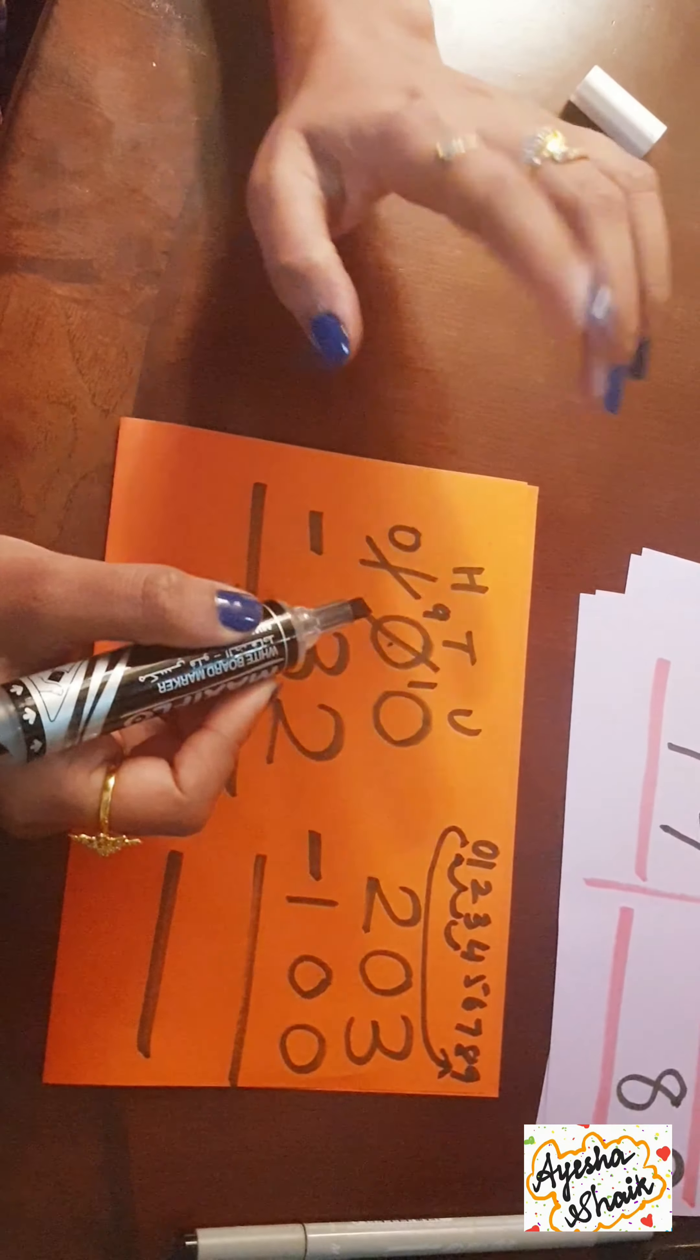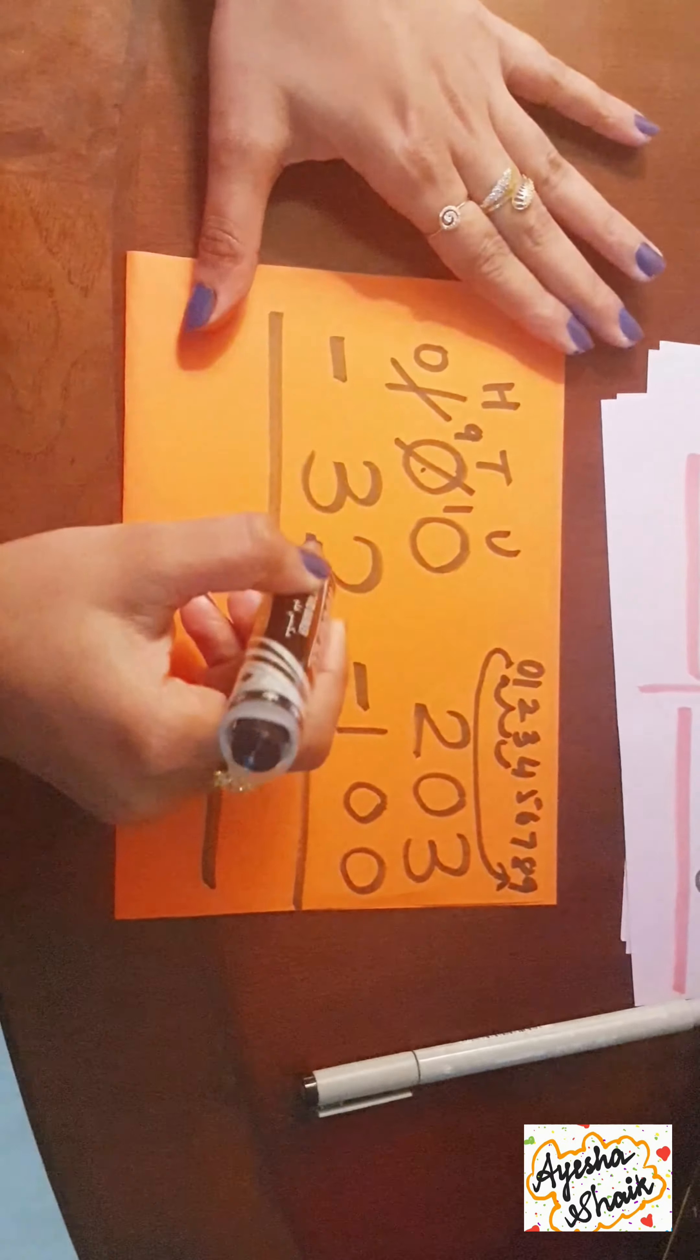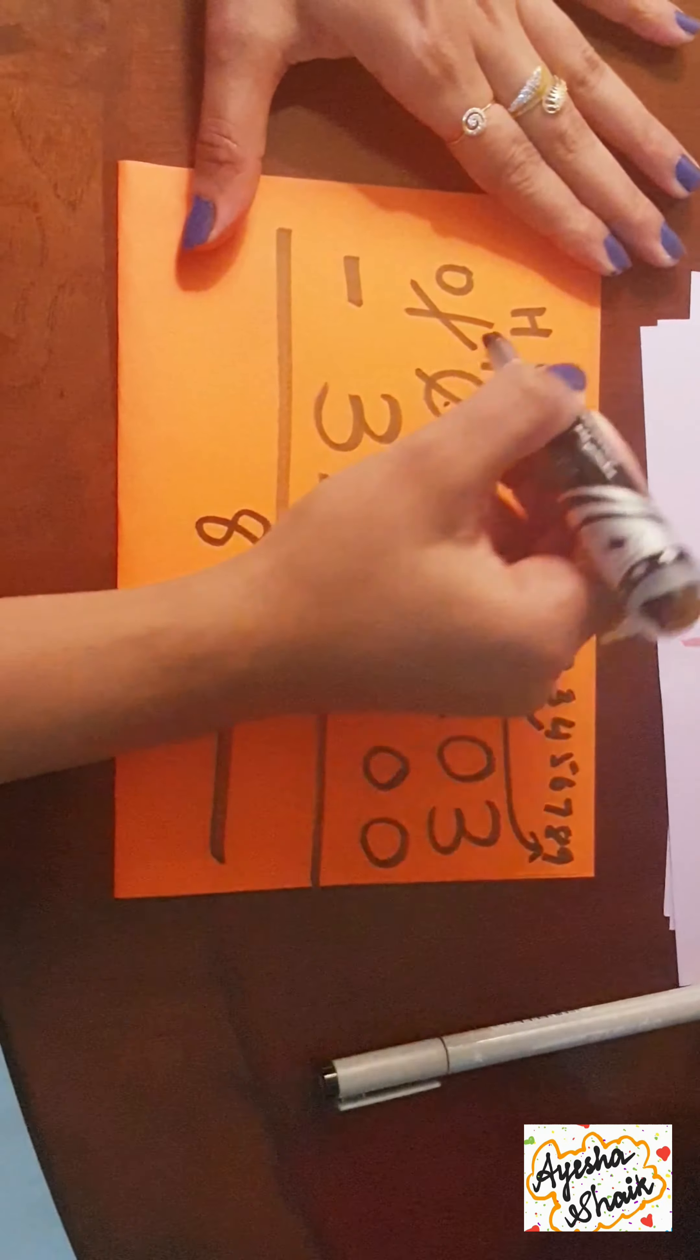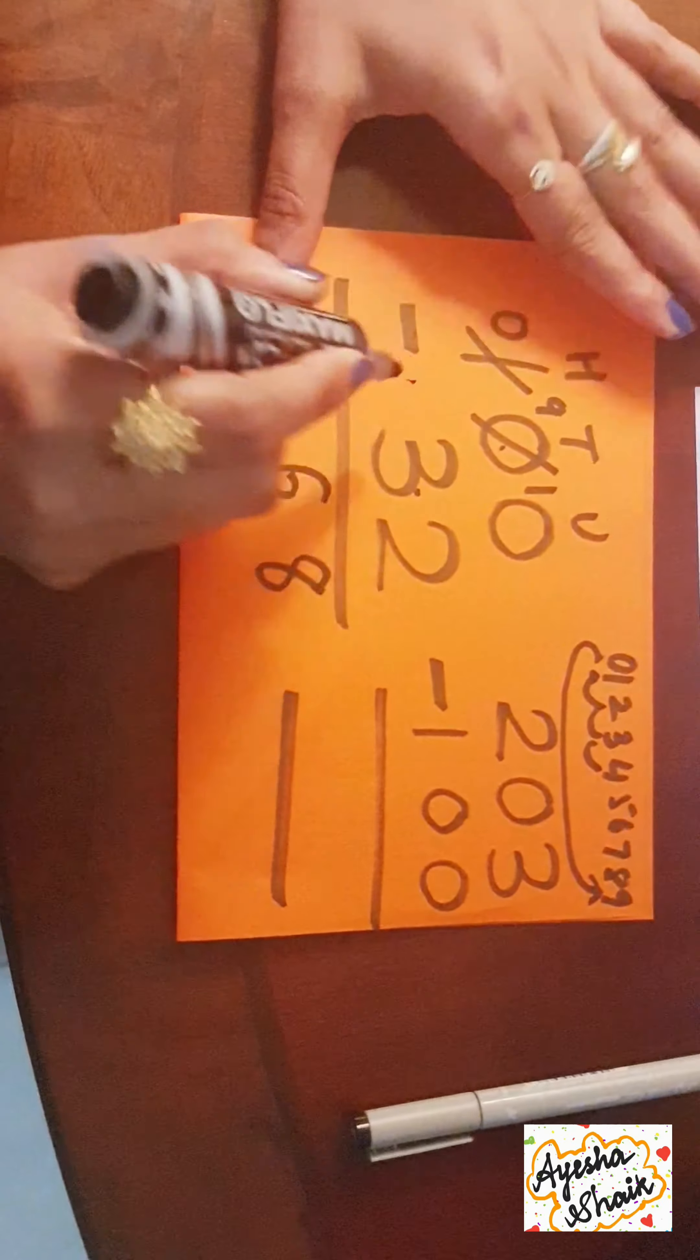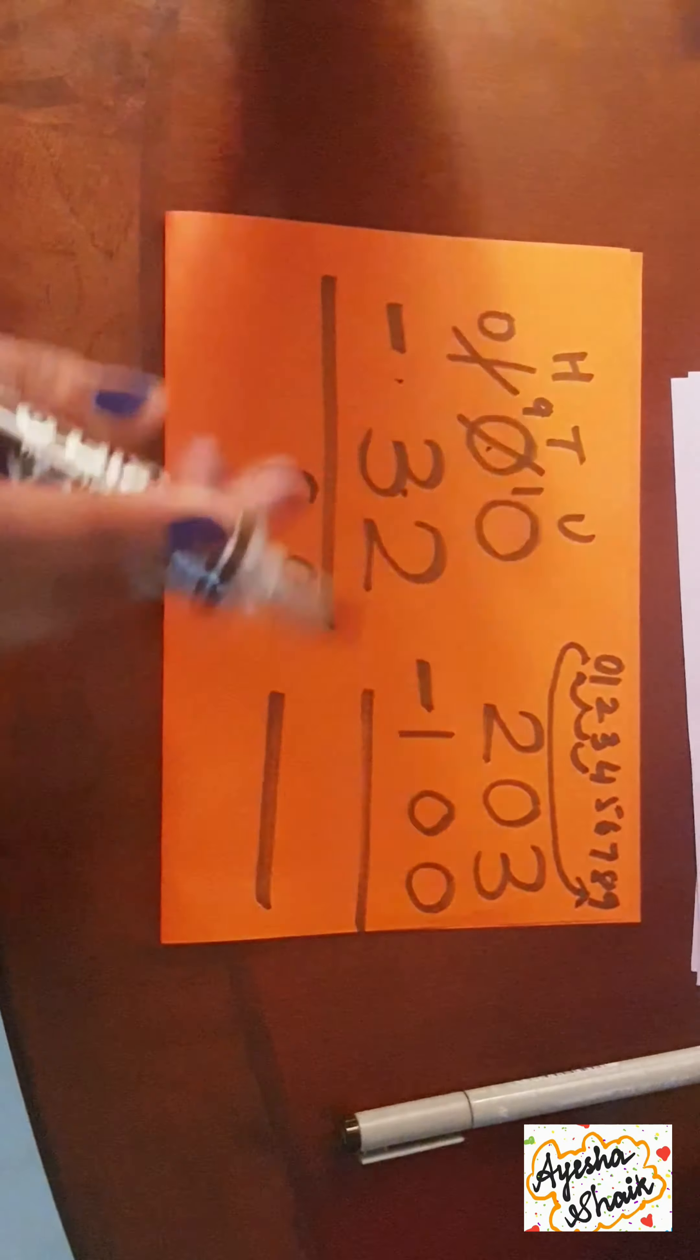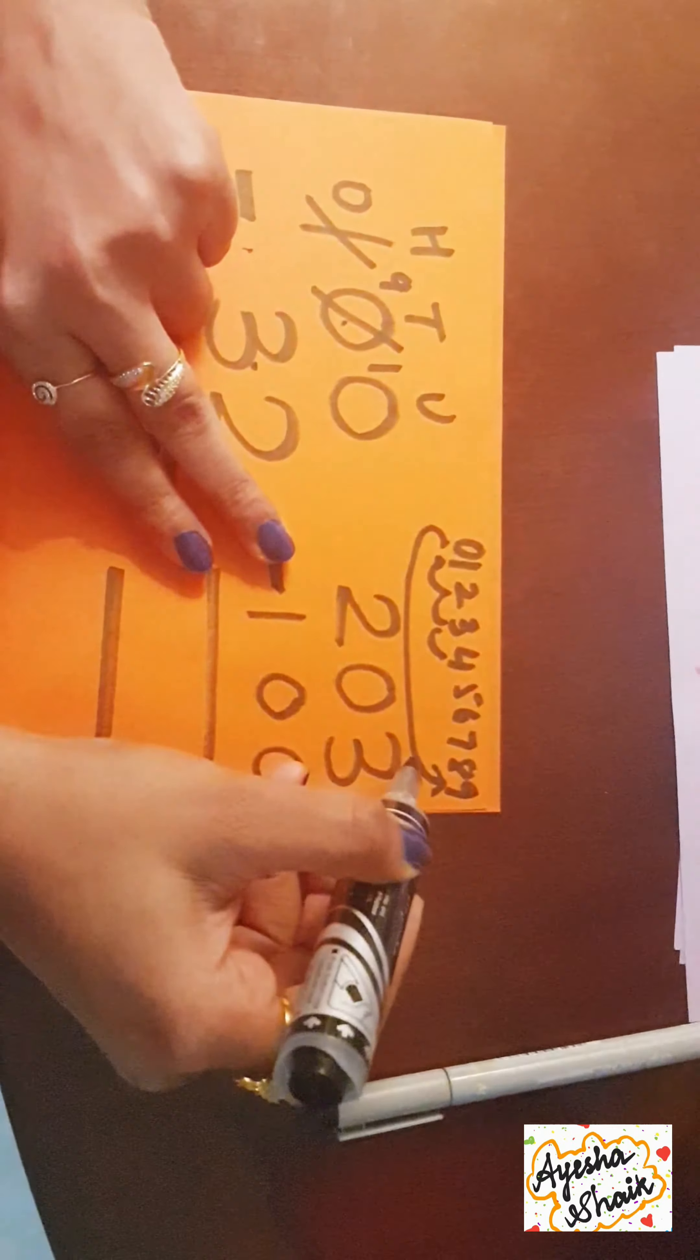So this is nine take away three. The one now becomes zero. Now let's look at the units place: ten take away two is eight. Nine take away three is six. And zero minus - even if it is empty it means zero. Zero minus zero is zero. If you write it, it's fine; even if you don't write it, it's absolutely fine.